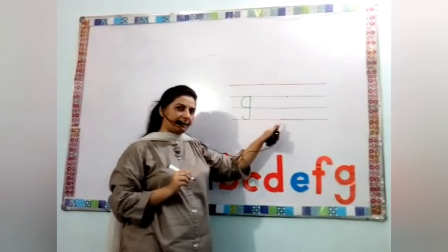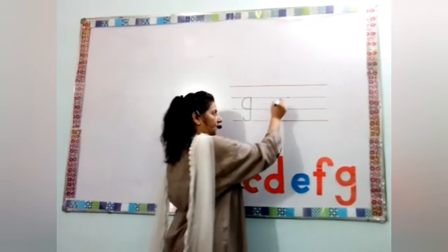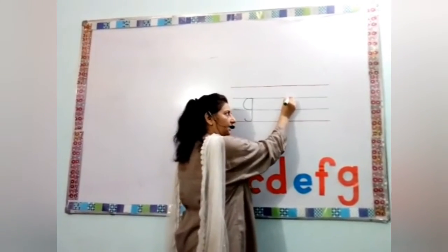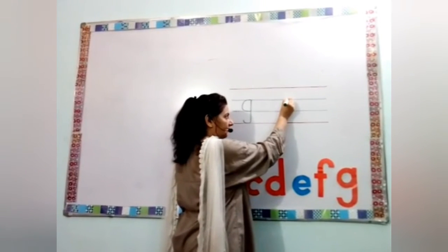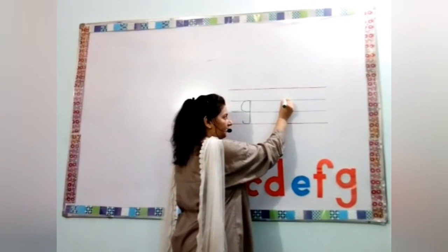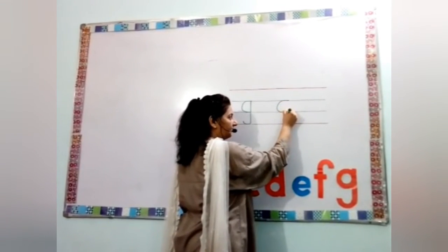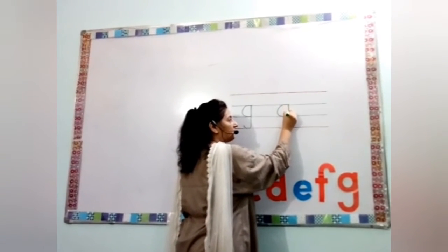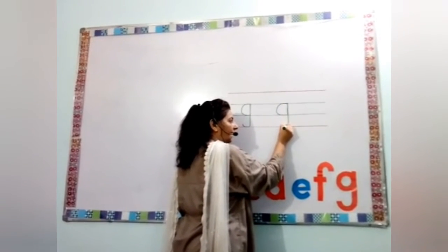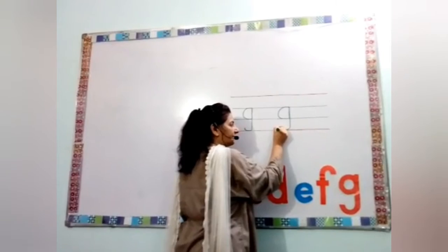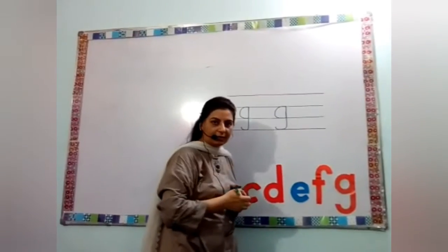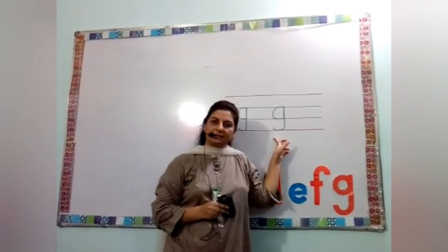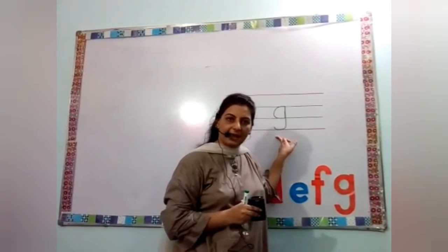Again I am writing. To write sound G, starts from the middle line. Make a G, go up, come down to the bottom and little turn. Which sound is this? G. Excellent.